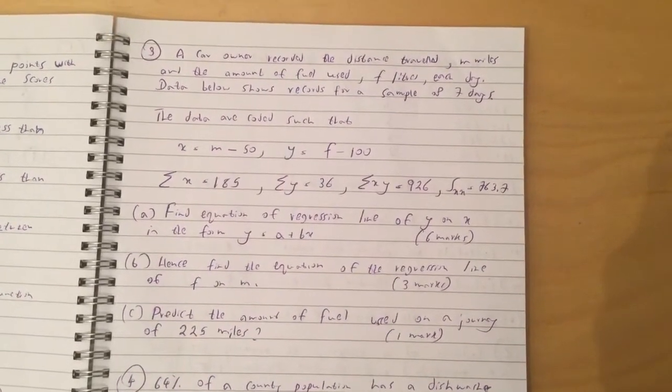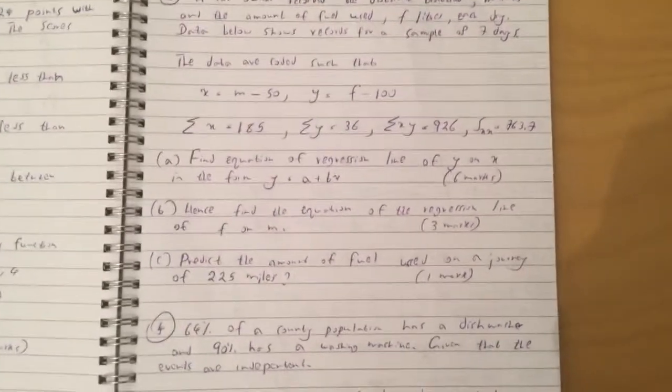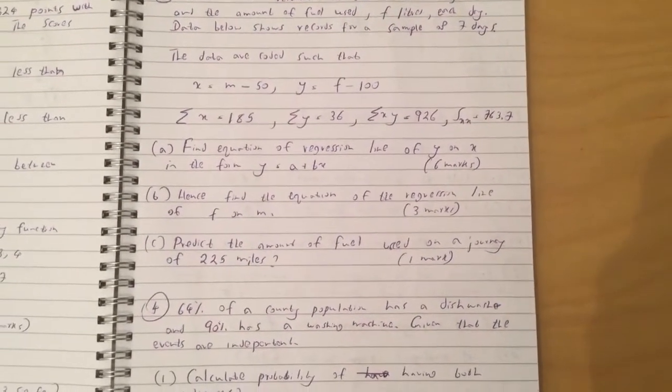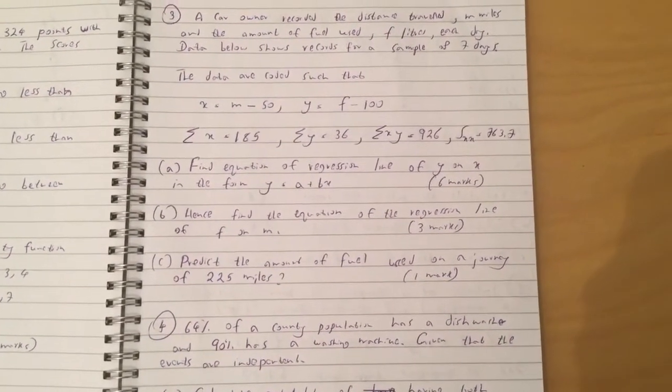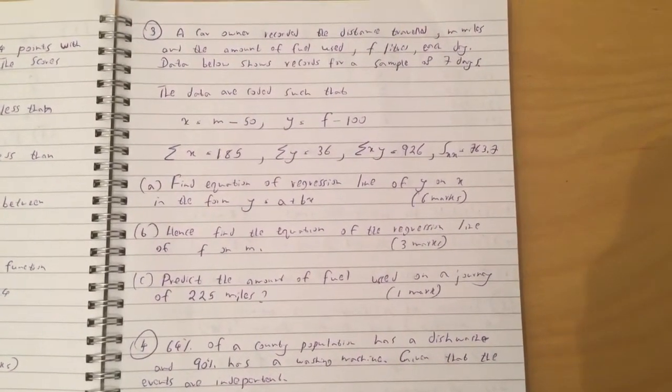Sum of x equals 185, sum of y equals 36, sum of xy equals 926, sum of xxx equals 763.7. Question 1: Find the equation of regression line of y on x in the form y equals a plus bx. Hence, find the equation of the regression line of f on m.